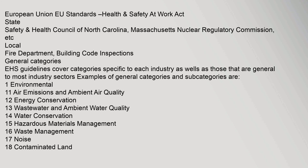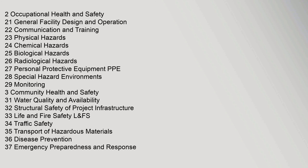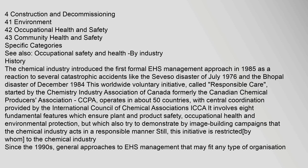Regulatory agencies include US Federal bodies and international occupational safety organizations, as well as European Union standards. General categories covered include: Occupational Health and Safety — covering facility design, communication and training, physical hazards, chemical hazards, biological hazards, radiological hazards, personal protective equipment, special hazard environments, and monitoring — as well as Community Health and Safety, covering water quality, structural safety, life and fire safety, and construction and decommissioning.